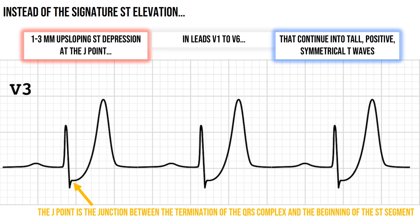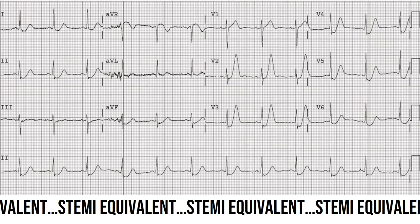symmetrical T-Waves. To reiterate: that's 1-3mm upsloping ST depression at the J-point, in leads V1 to V6, that continue into tall, positive, symmetrical T-Waves.